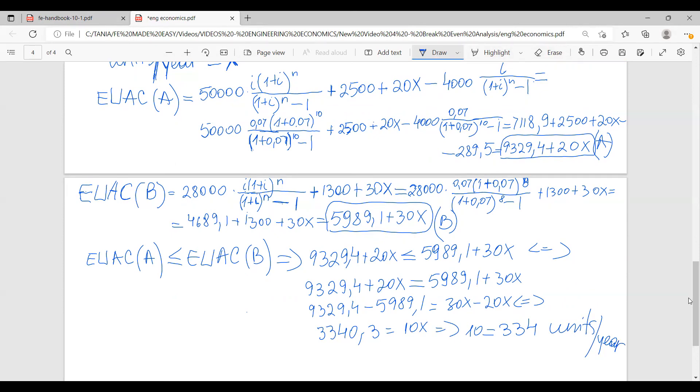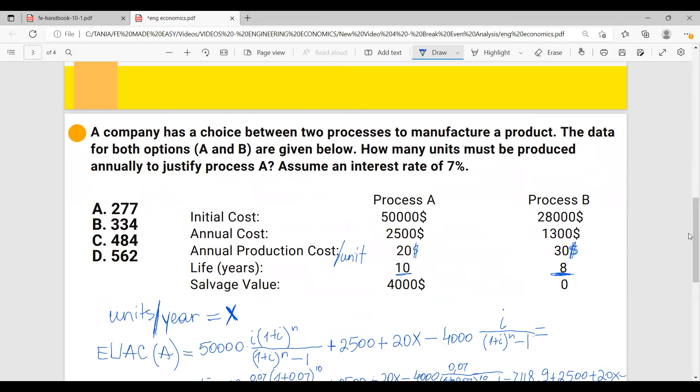Let's look at the options. 334 is option B.